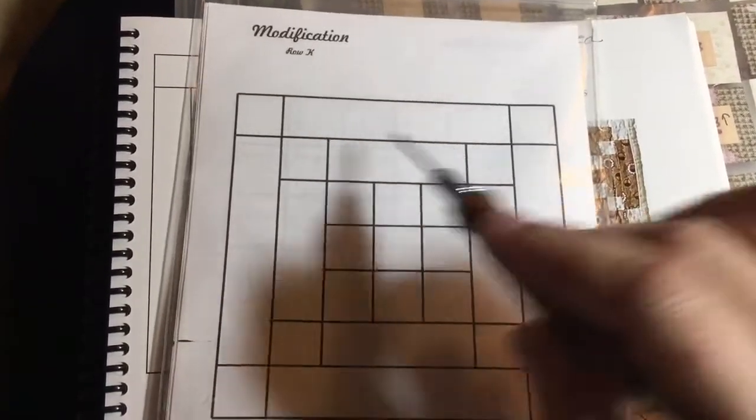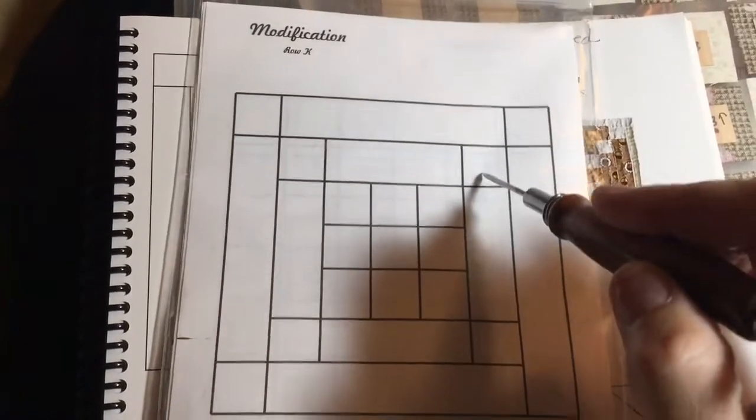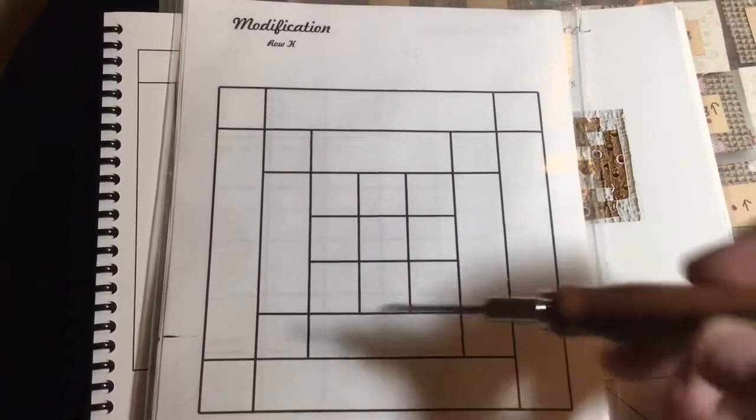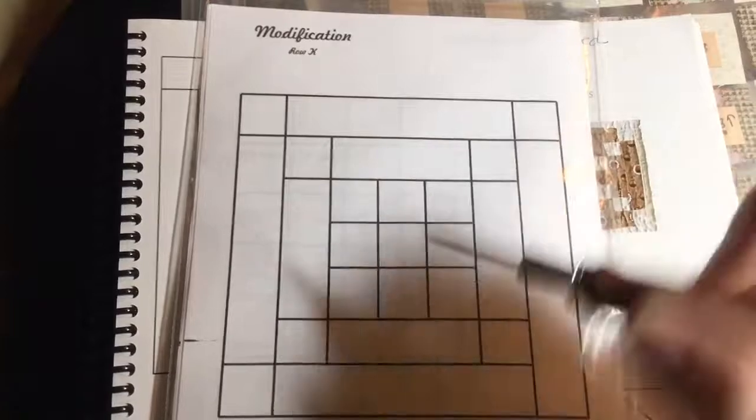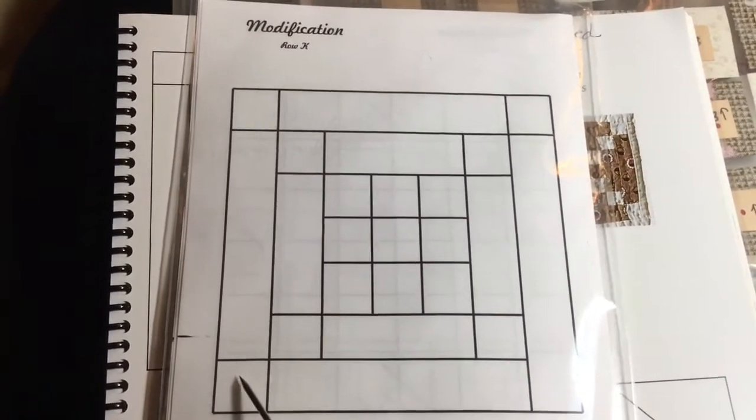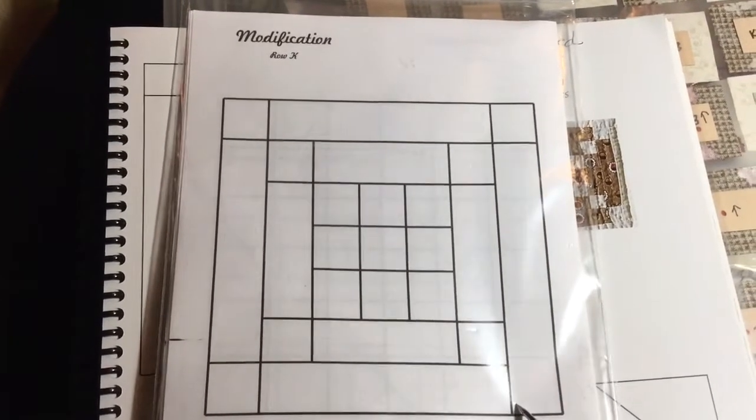and then forming this top row with the square rectangle square, and the same thing down here, and then assembling this, and then treating that same, doing that same type of thing out here.